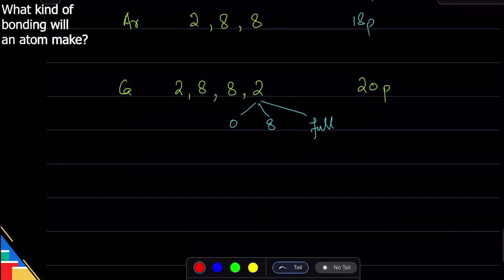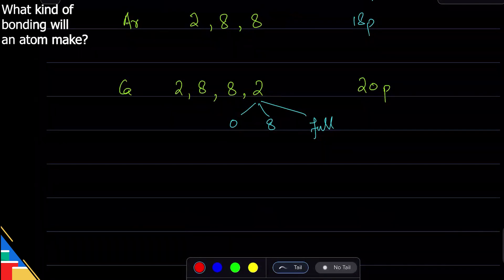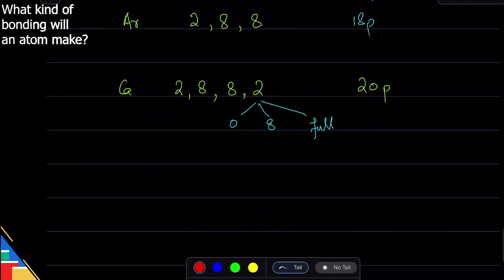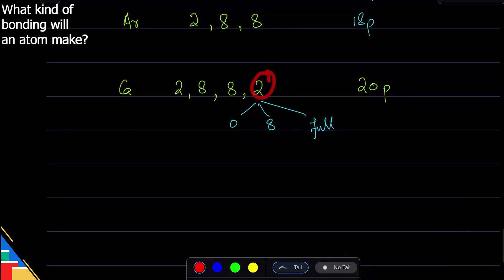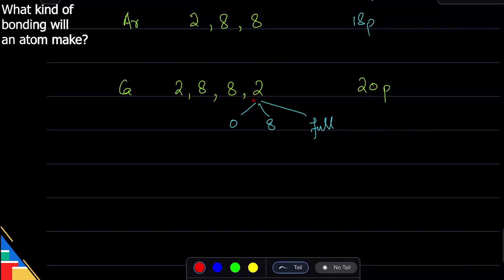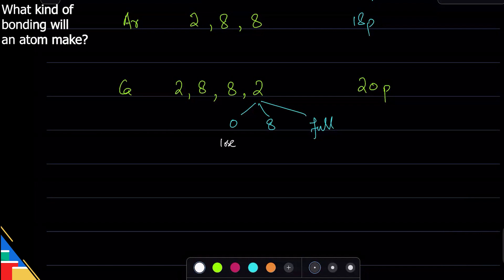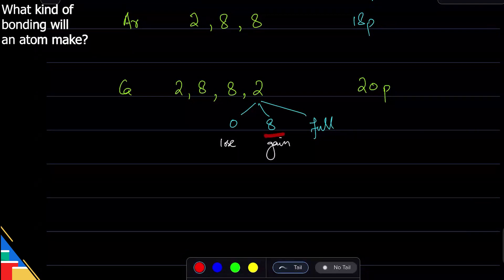Which one will it go to? Remember, taking or losing electrons takes a lot of energy. In this case, these two electrons can either be lost to bring us to zero - that is one option - or it can gain some electrons to get to 8 or full.